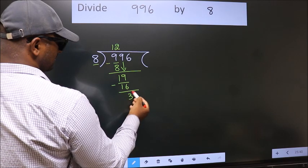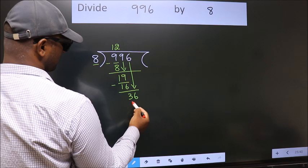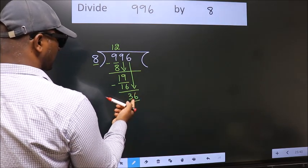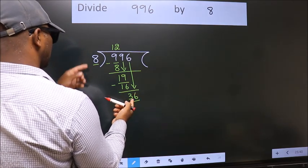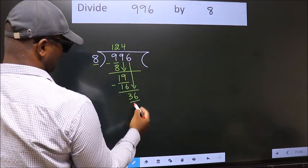After this, bring down the beside number. So, 6 down. So, 36. A number close to 36 in 8 table is 8 fours, 32.